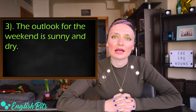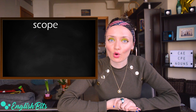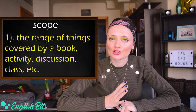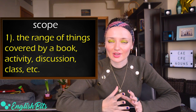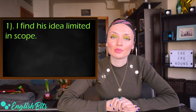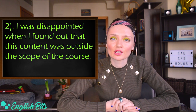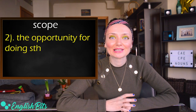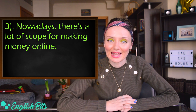Noun number three is scope, which also has two meanings. The first is the range of things covered by a book, activity, discussion, class, etc. — for example, 'I find his idea limited in scope' or 'I was disappointed when I found out that this content was outside the scope of the course.' The second meaning is the opportunity for doing something new — for example, 'Nowadays there is a lot of scope for making money online.' The preposition used is scope for.